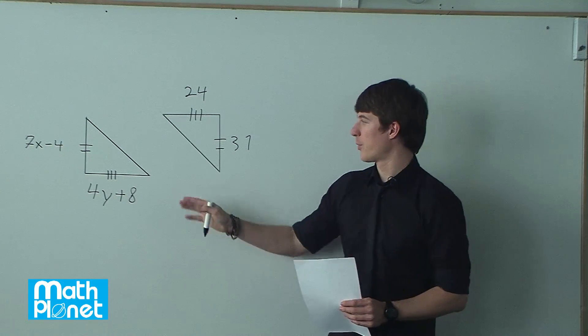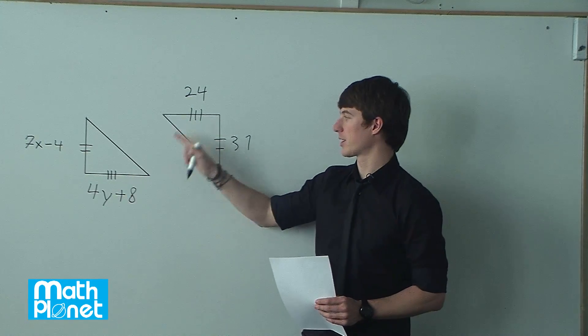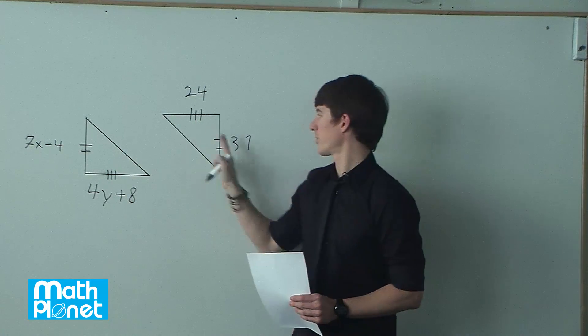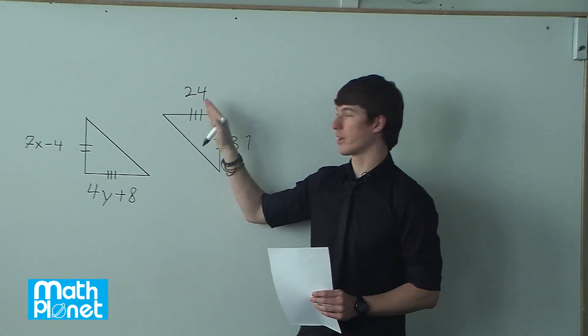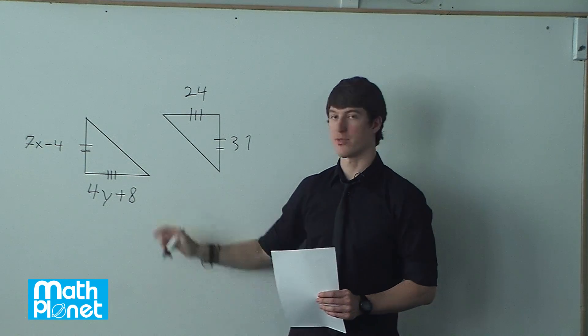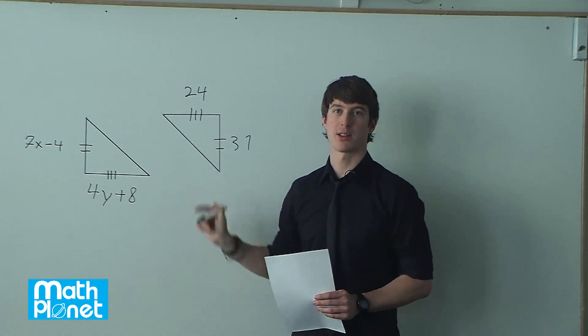Here we have two like triangles, and we can see that these three ticks indicate that these sides are the same, two are the same, and this hypotenuse is the same. We want to make some equations based on what we know here to solve for x and y, such that they are in fact like triangles.